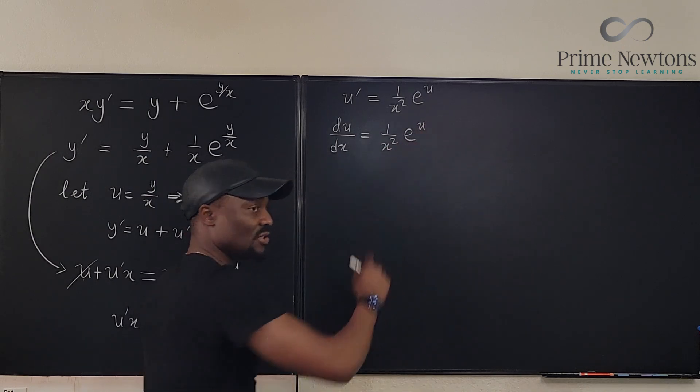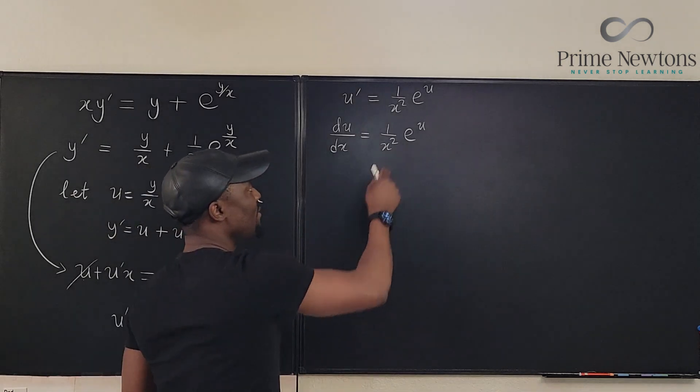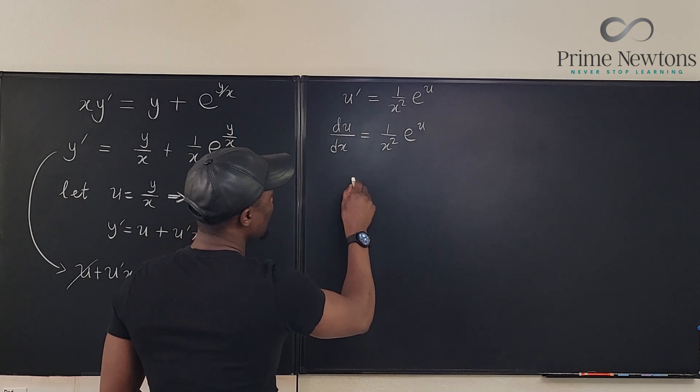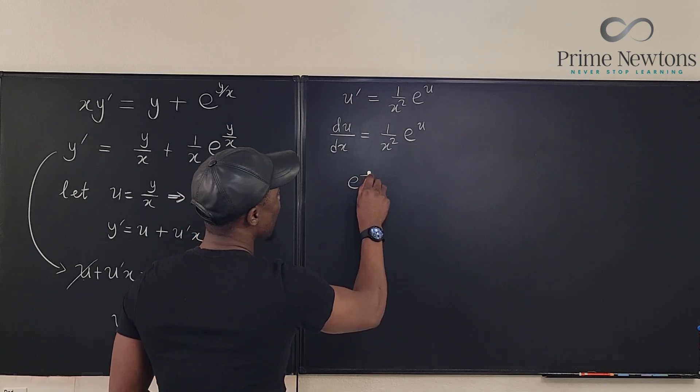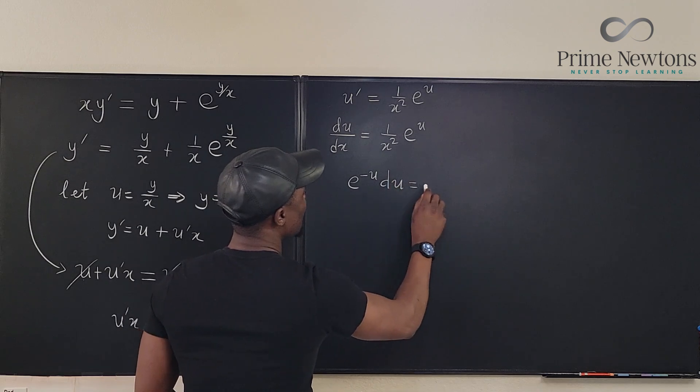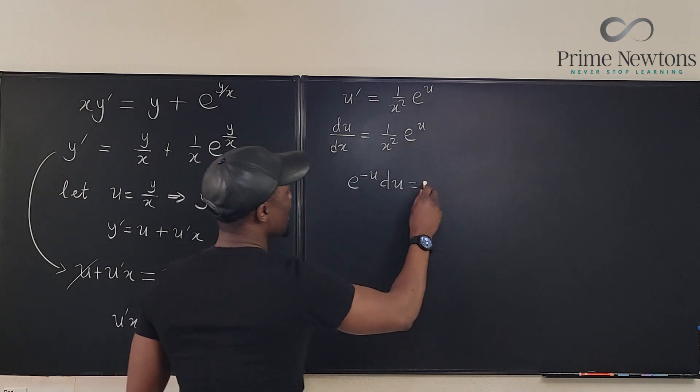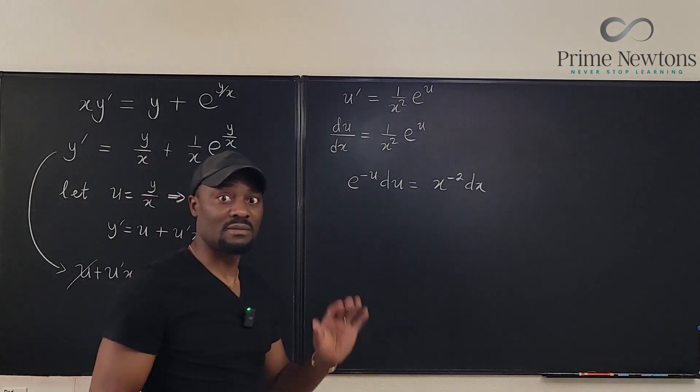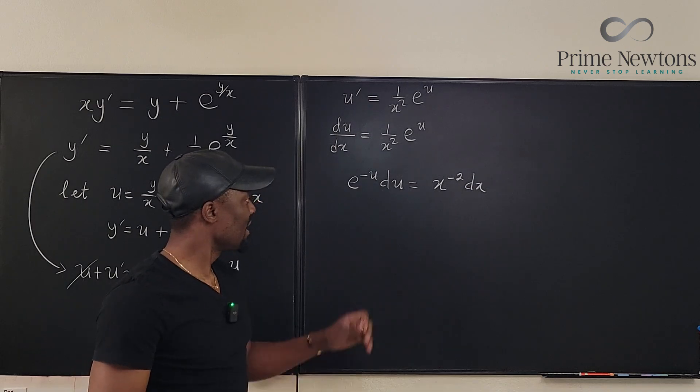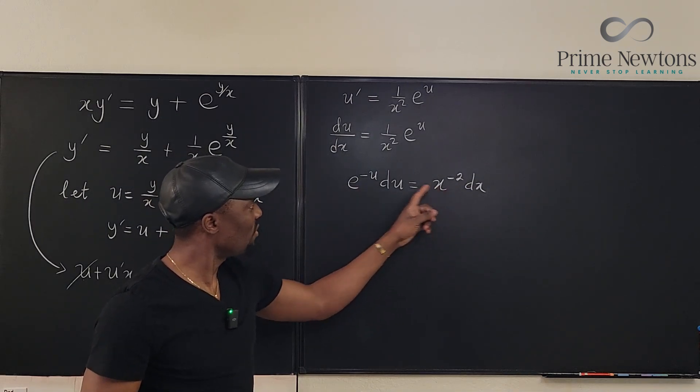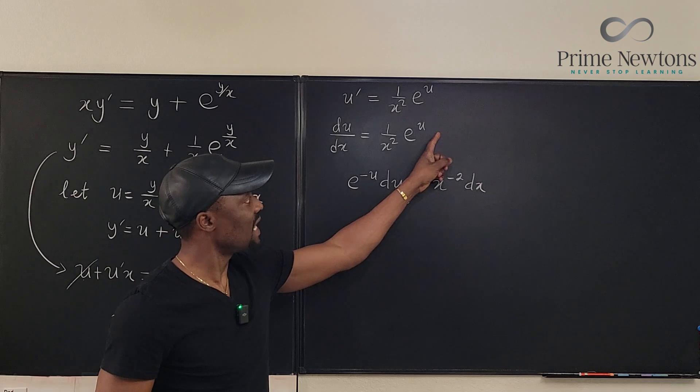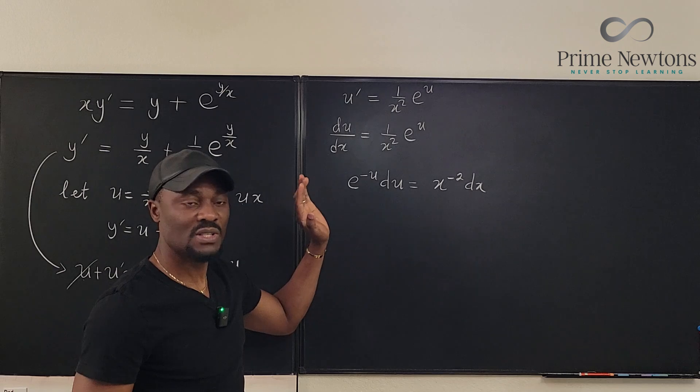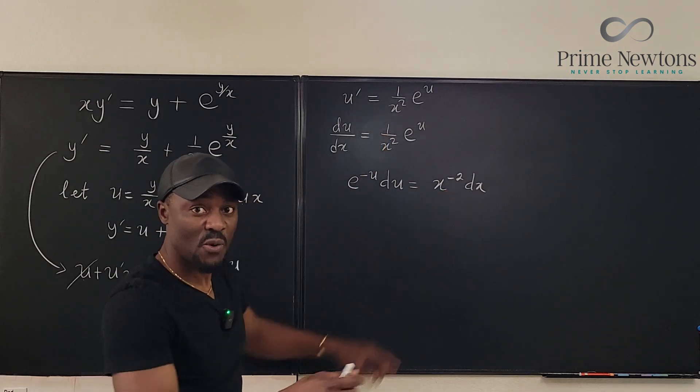So now we can take the terms containing u, bring them here and leave one over x squared here. If I divide both sides this way I'm going to have e to the negative u du will be equal to x to the negative 2 dx. I've written both of them in exponential form, in exponent form. So I can now integrate both of them. See I multiplied by dx and brought this here. It became one over e to the u which is e to the negative one. The du was still here, dx is here and I wrote this this way. So now we integrate both sides.